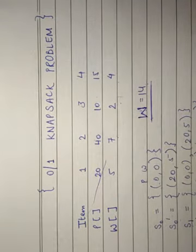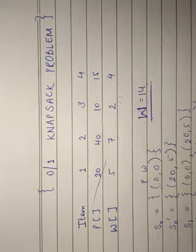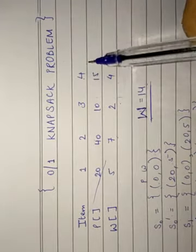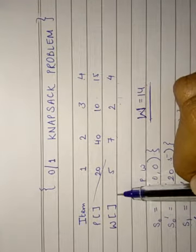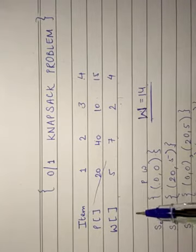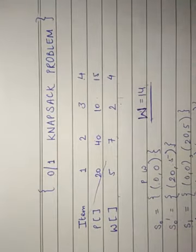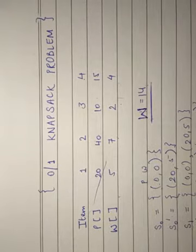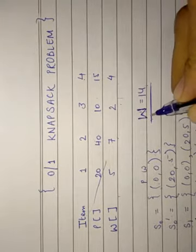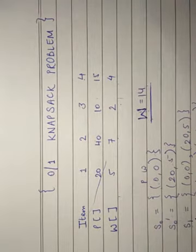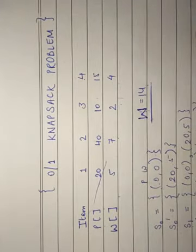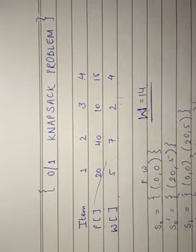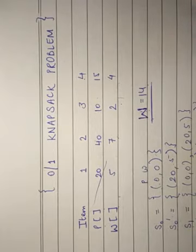Let us understand what the knapsack problem is. In this problem a thief wants to steal some items from N available items. Each of the N items has a certain specified weight and profit. The thief may carry as many items as fit within the knapsack capacity — knapsack meaning a kind of bag. The capacity will be given to us. The parameters for the knapsack problem are W, the knapsack capacity, the profit array P storing the profit of each item, and the weight array W. We need to optimize the profit within the knapsack capacity.